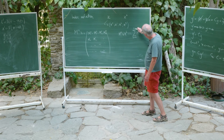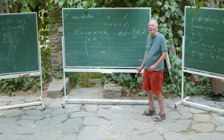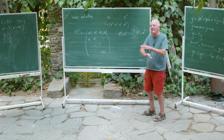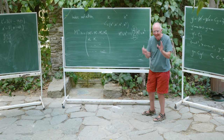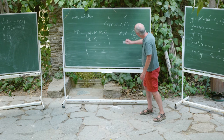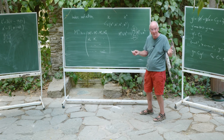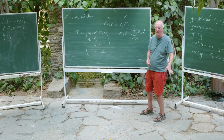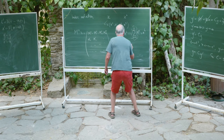I wrote down in the lecture notes a contraction: M-superscript-ab times x-subscript-b. In index notation there is an implicit convention — introduced by Einstein — that this means the sum from b equals zero to three of M^ab x_b. Einstein said: whenever you see a repeated index, there is actually a summation symbol there which I'm not going to write down because I'm fed up of writing it. So any repeated index means summation.